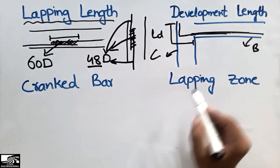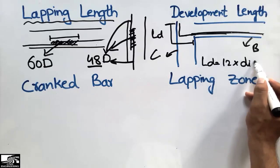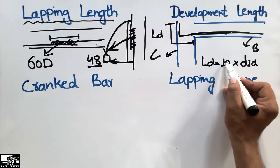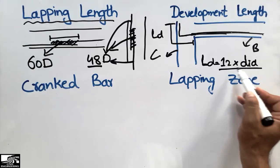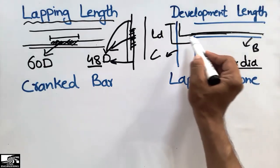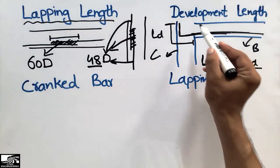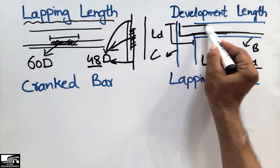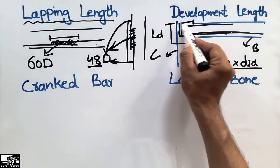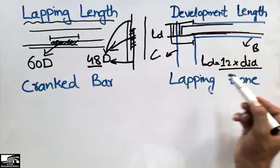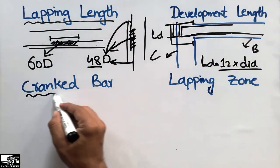The development length is represented by LD and is usually taken as 12 times the diameter of the bar. By multiplying the bar diameter by 12, we get the required development length to transfer load from one member to another. Similarly, sometimes at the top of a beam we also need development length, and its formula is also 12 times the diameter of the bar.